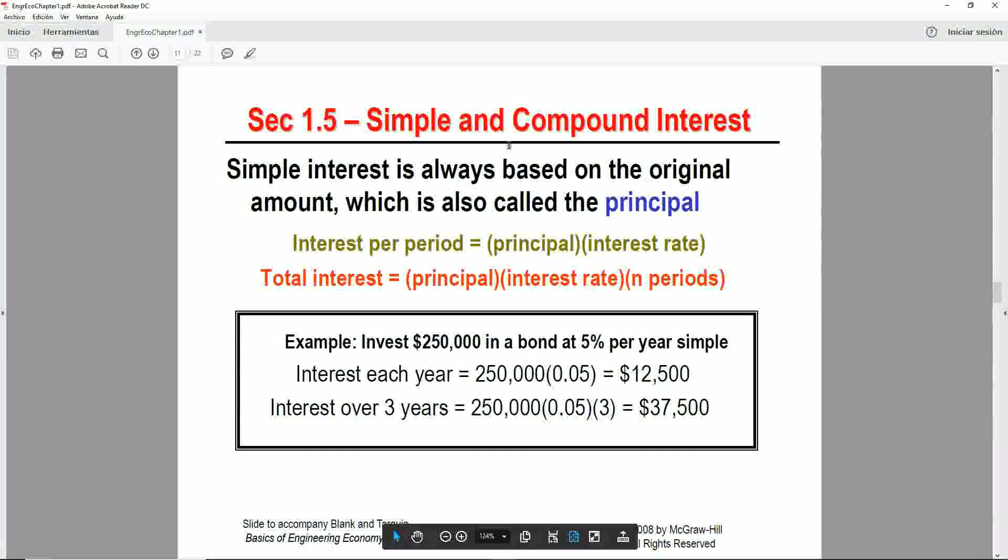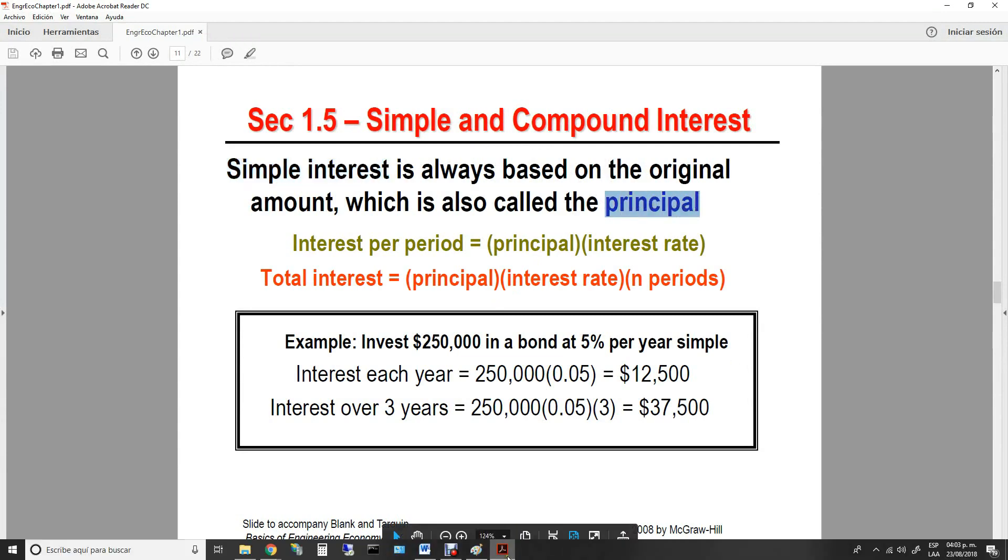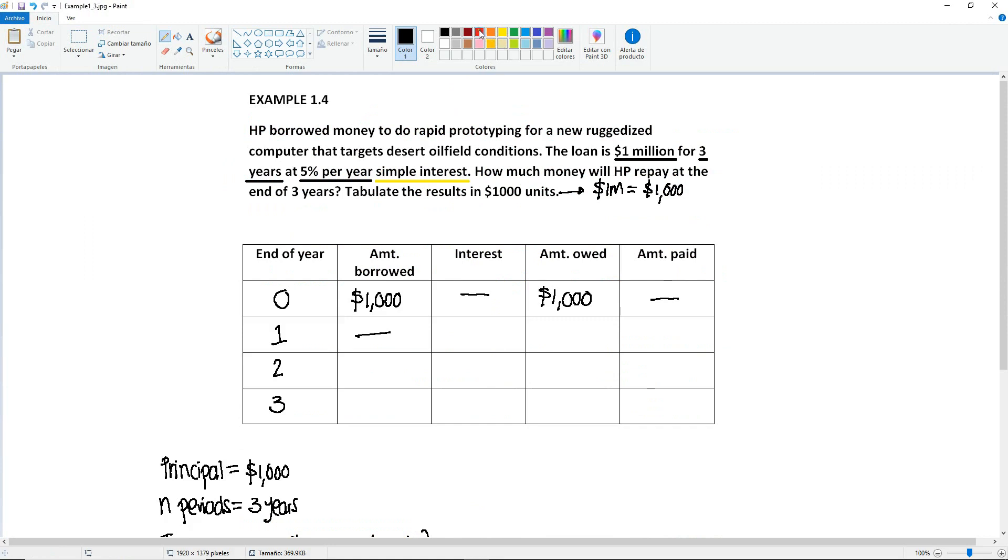If you go back to your notes, for simple interest, it says that it is always based on the original amount or the principal. So your interest right here, and I'm gonna put it as a note, must be calculated on the principal or the amount borrowed. So that means that whatever interest you have here, it's going to be calculated over those $1,000.